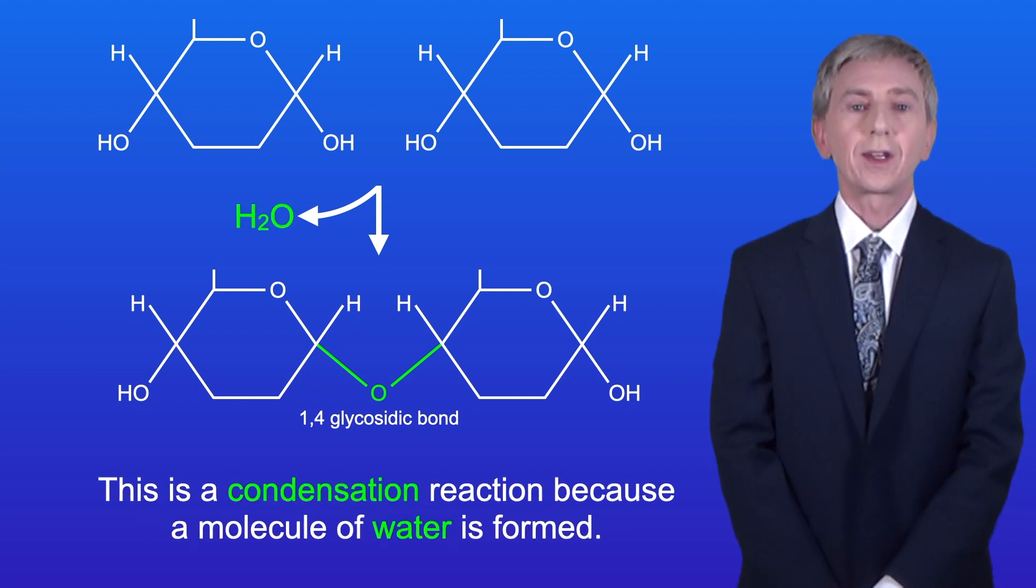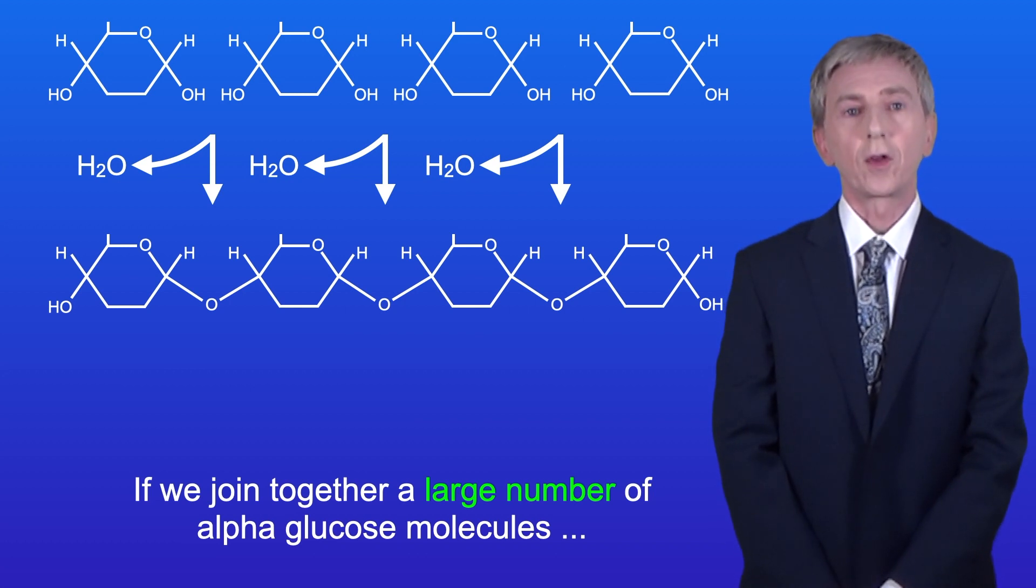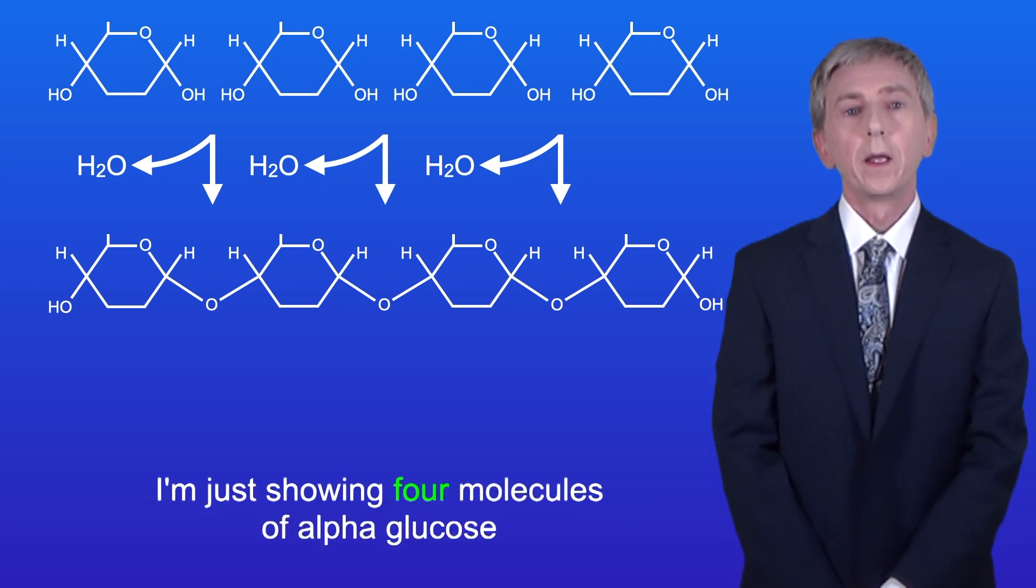This is a condensation reaction because a molecule of water has formed. Now if we join together a large number of alpha glucose molecules, then we make the polysaccharide amylose and I'm showing you that here. I'm just showing four molecules of alpha glucose.